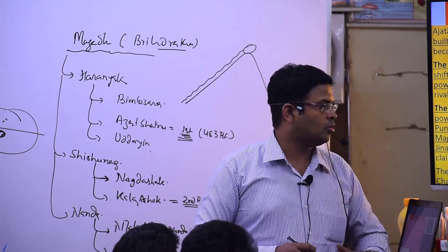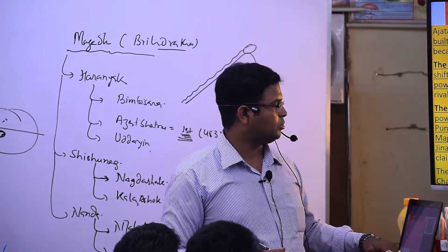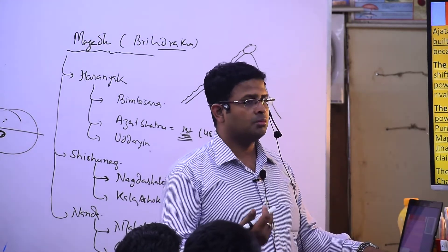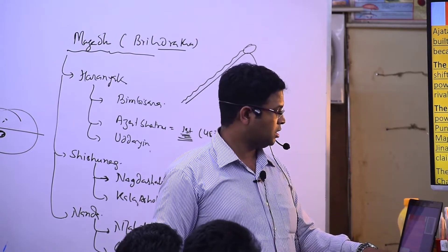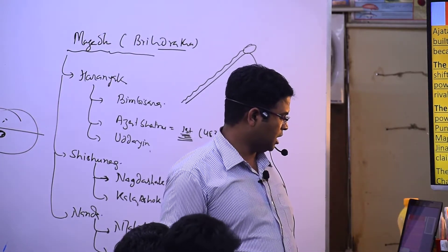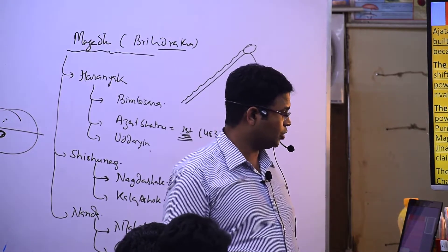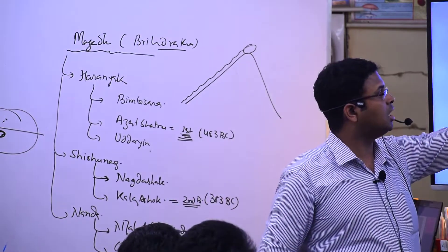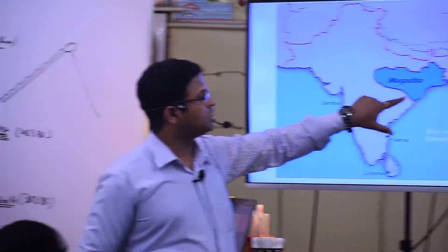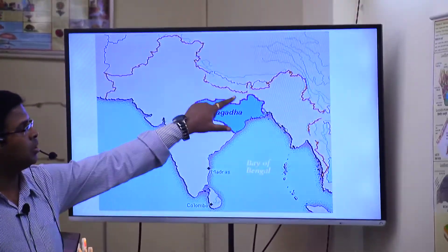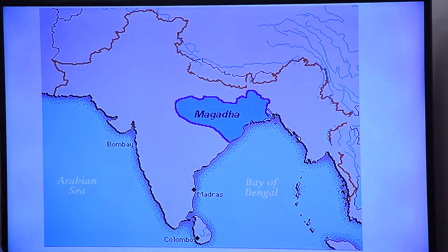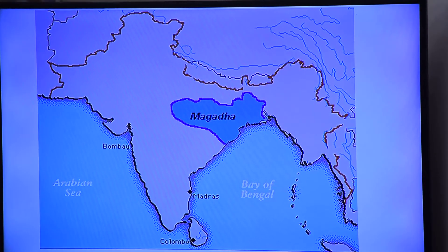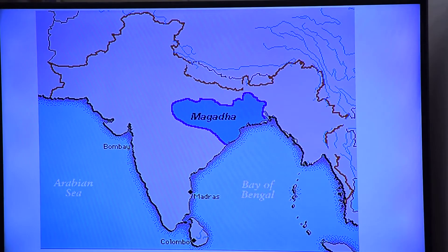The last Nanda ruler was defeated by Chandragupta Maurya, who founded the Mauryan Empire. After that, the Magadha Empire kept increasing, and all this territory was also taken as he expanded his empire.